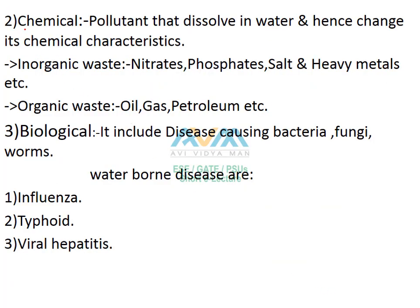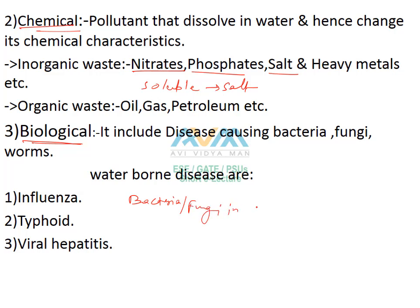The second type is chemical degradation of water, caused by accumulation of inorganic waste such as nitrates, phosphates, heavy metals, and soluble salts. These change the chemical characteristics of water, and when consumed by living organisms, cause various diseases. The third type is biological degradation, which refers to waterborne diseases such as influenza and typhoid, caused by bacteria, fungi, and other worms.